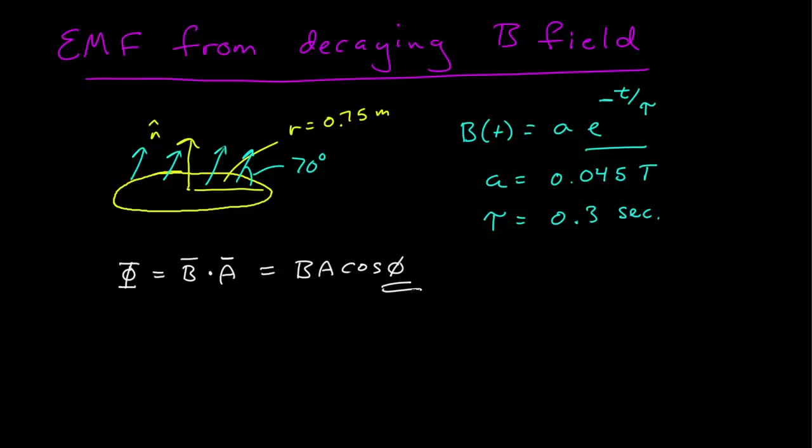And so this is now B times the area times cosine phi. Remember, phi is the angle between the magnetic field and n-hat when those two vectors are tail to tail. So in fact, that angle is this one, because this blue vector is the magnetic field, this yellow vector is the n-hat, and so the angle between them is 20 degrees.